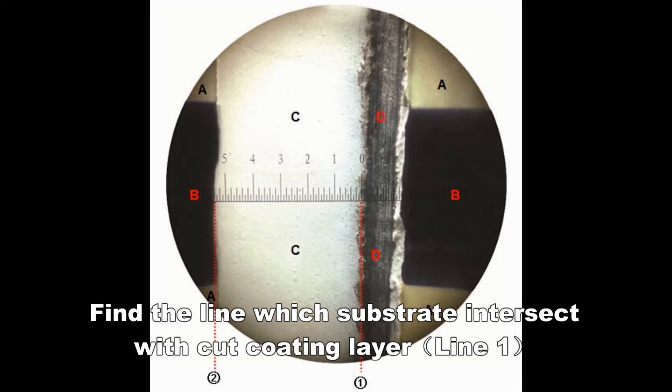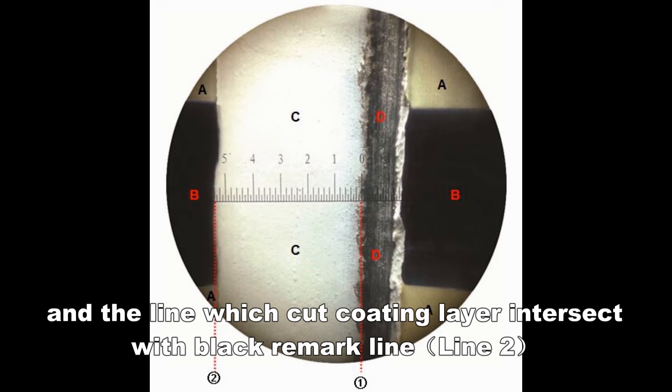Find the line where the substrate intersects with the cut coating layer and the line where the cut coating layer intersects with the black mark line.